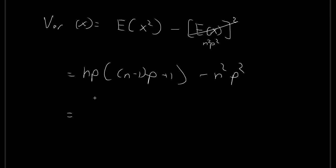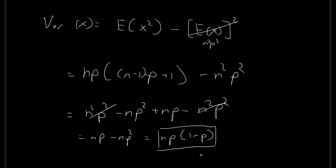And so breaking apart these brackets here, we have n squared p squared minus np squared plus np. And then we also have minus n squared p squared. These cancel out. And then in the end, we have np minus np squared. Or in its commonly presented form, we have np times 1 minus p. And so this is the variance of the binomial distribution.